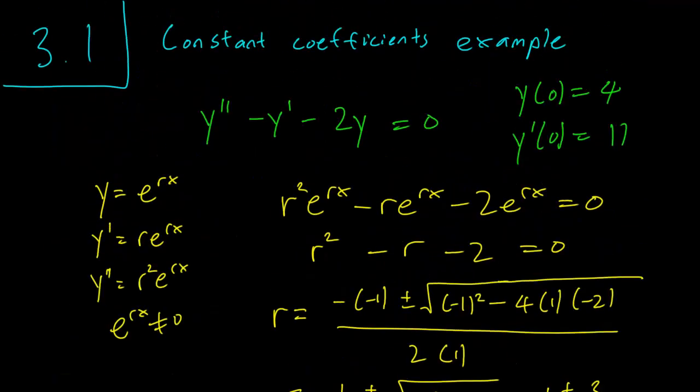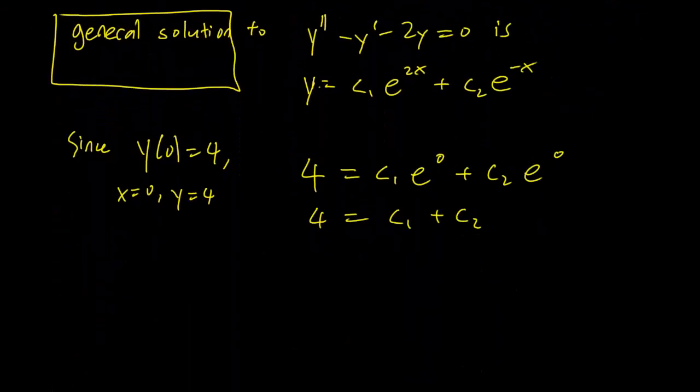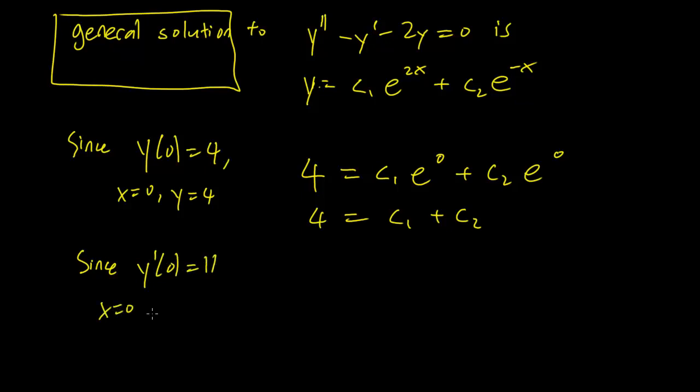We also have a second piece of information, y prime of 0 equals 11. So since y prime of 0 is equal to 11, this means that when x equals 0, y prime is equal to 11. And so we can take the derivative of this equation to get y prime.